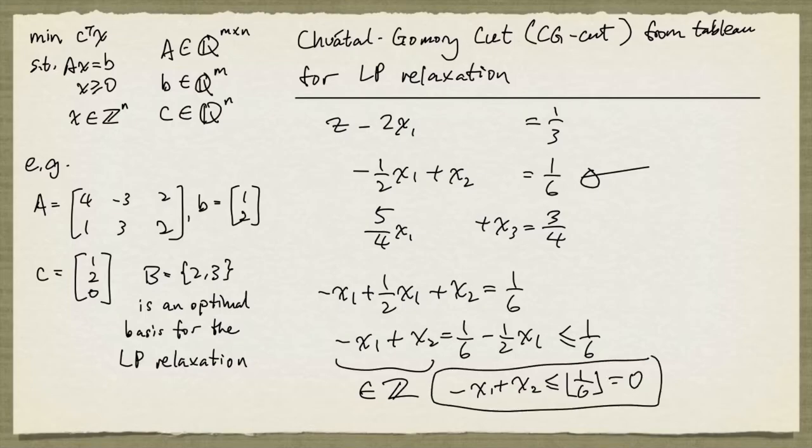So this inequality, negative x1 plus x2 at most 0, is a CG cut. And we can do the same thing to the x3 row.